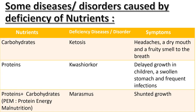If a person lacks proteins, then he may suffer from a disease called Kwashiorkor. Its symptoms include delayed growth in children, a swollen stomach, and frequent infections. If a person lacks both proteins and carbohydrates — commonly known as PEM, which stands for protein energy malnutrition — then there are high chances he may suffer from Marasmus, in which the person has stunted growth.